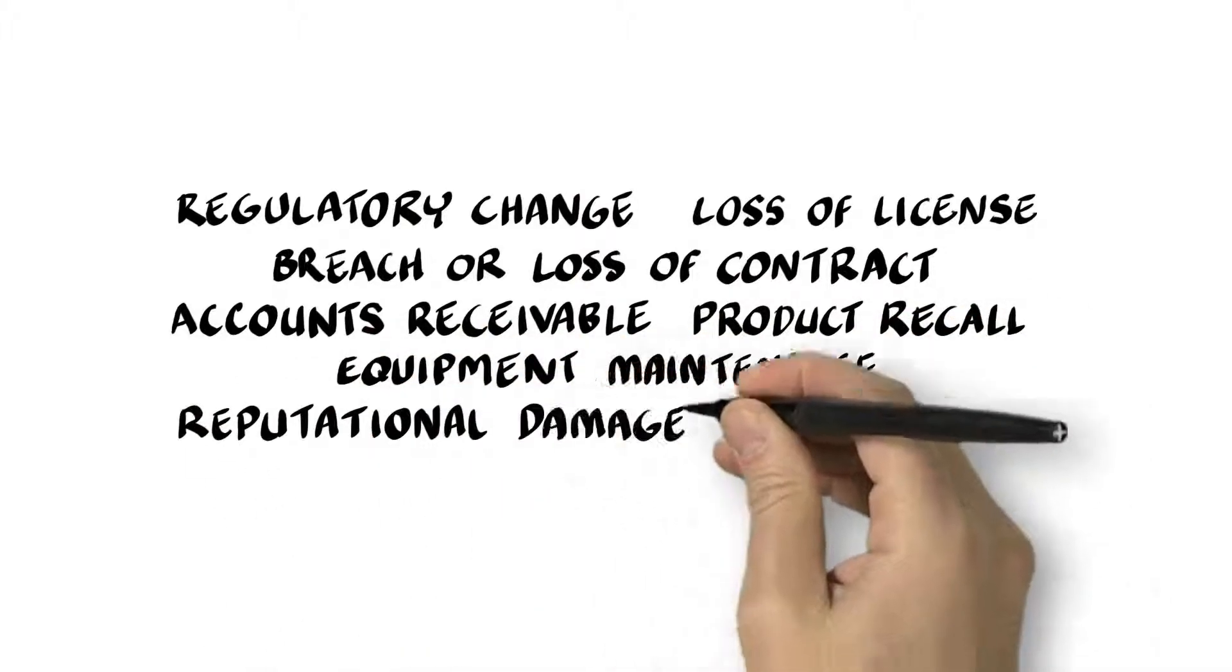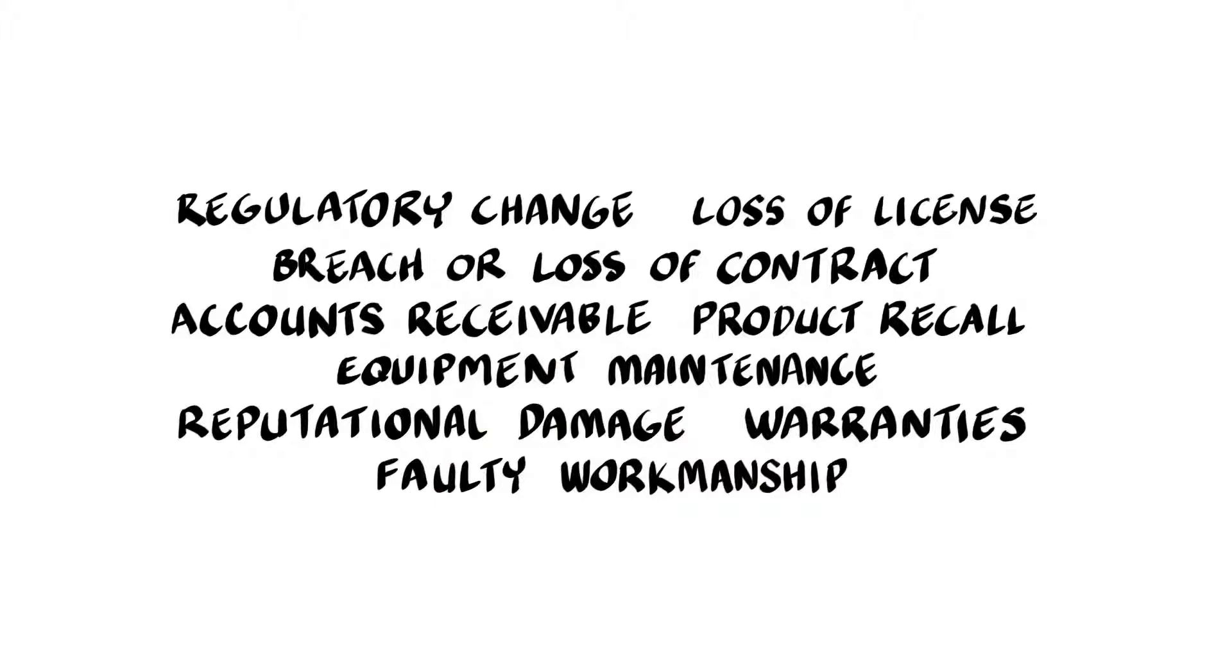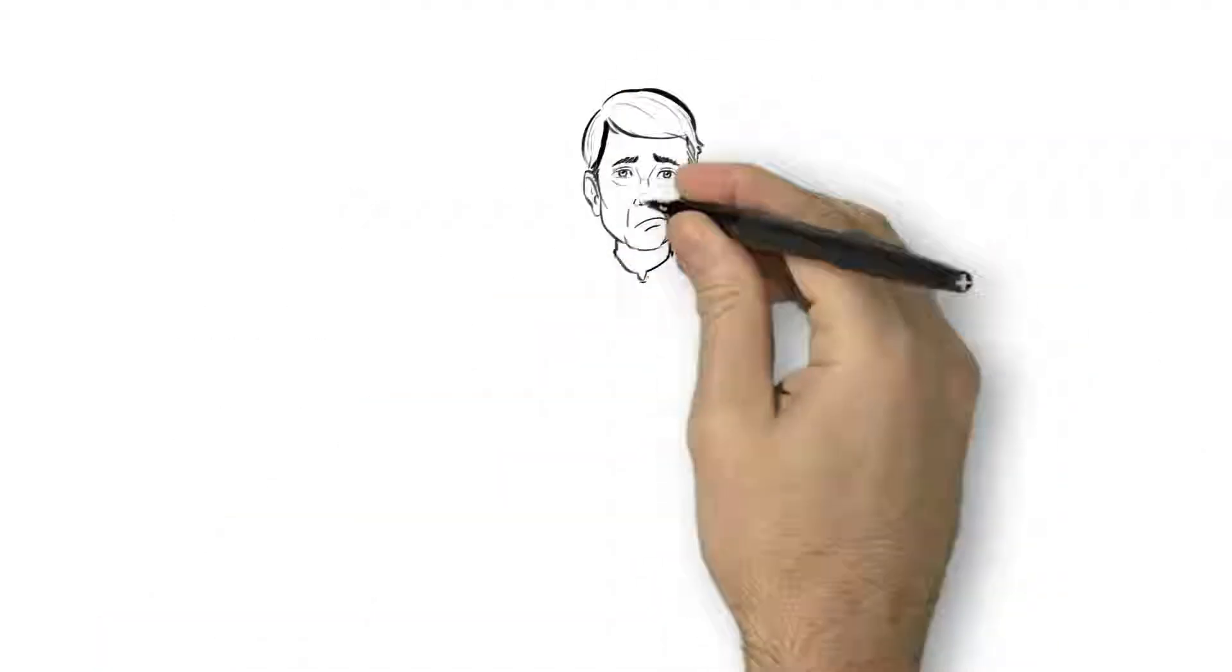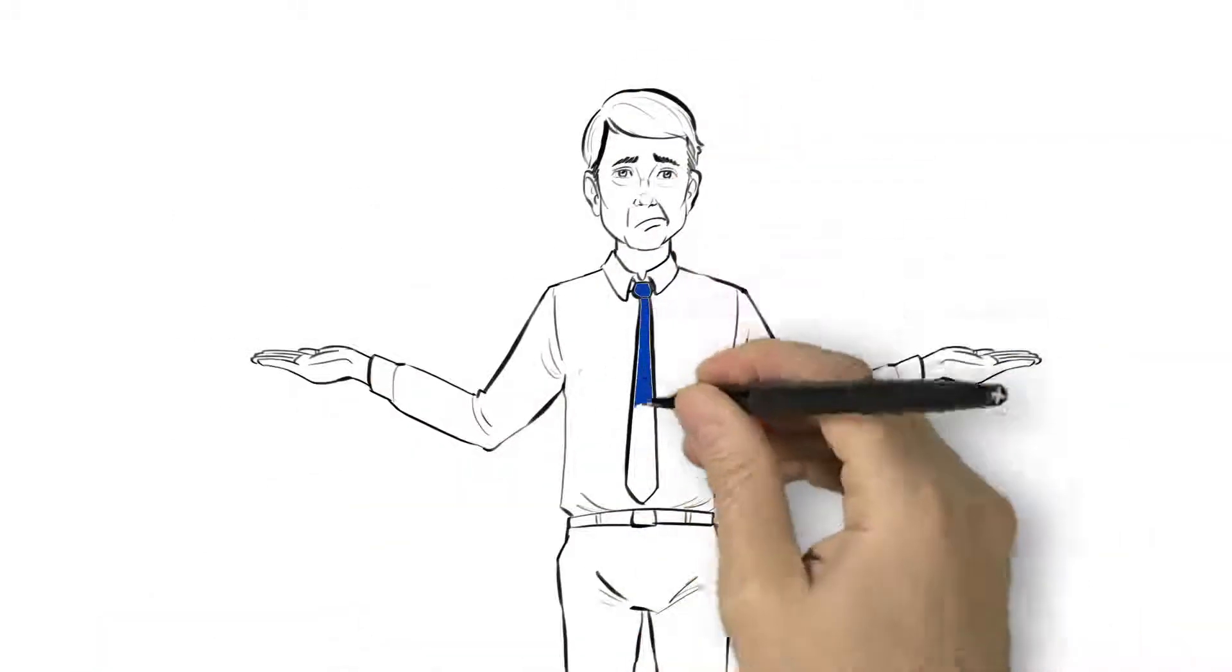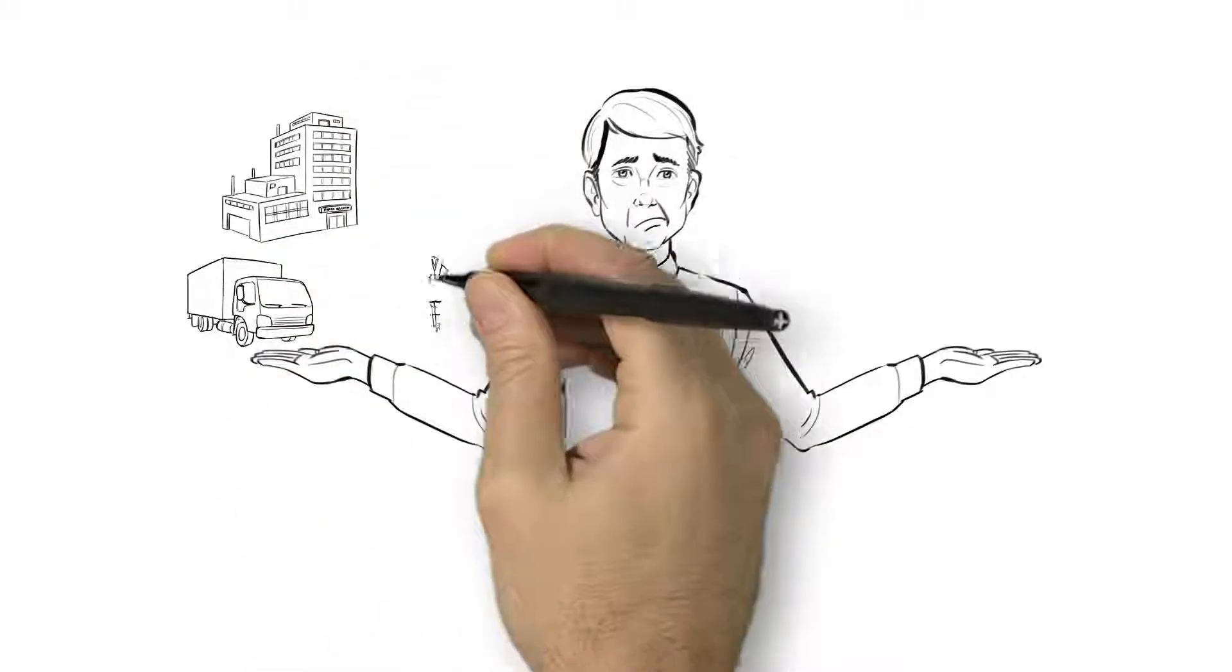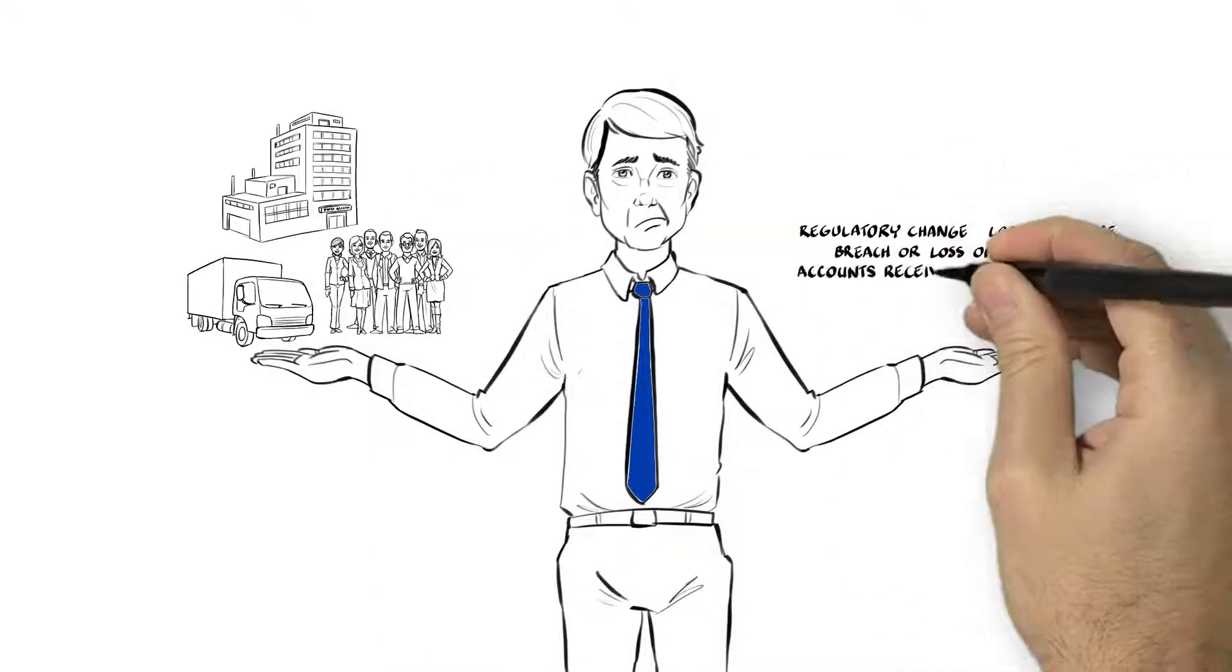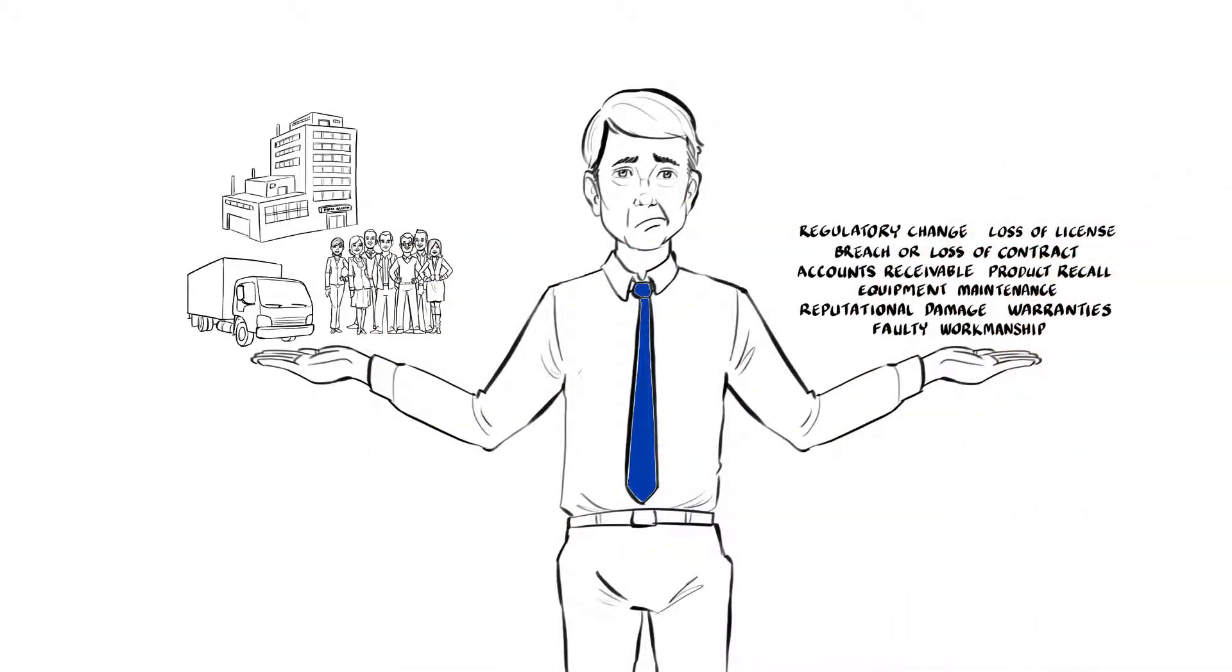However, what Jim failed to address were the enterprise or non-traditional exposures which JSP faced every day. Although Jim recognizes that his company could suffer significant financial damage should these losses occur, he was not able to transfer them through traditional insurance because such coverages were either not available or too expensive to purchase.